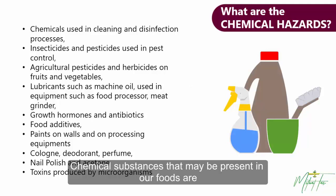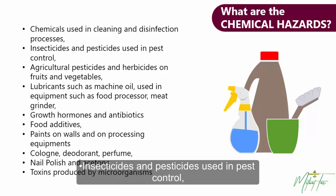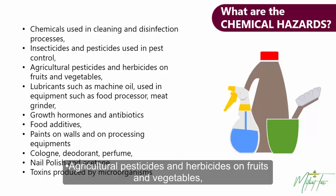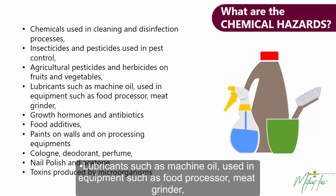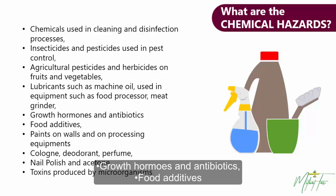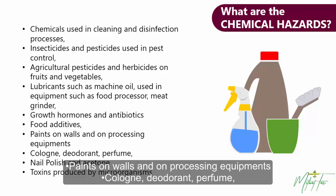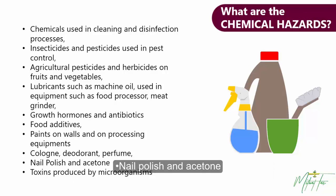Chemical substances that may be present in our foods include: chemicals used in cleaning and disinfection processes; insecticides and pesticides used in pest control; agricultural pesticides and herbicides on fruits and vegetables; lubricants such as machine oil used in equipment like food processors and meat grinders; growth hormones and antibiotics; food additives; paints on walls and processing equipment; cologne, deodorant, perfume; nail polish and acetone; and toxins produced by microorganisms.